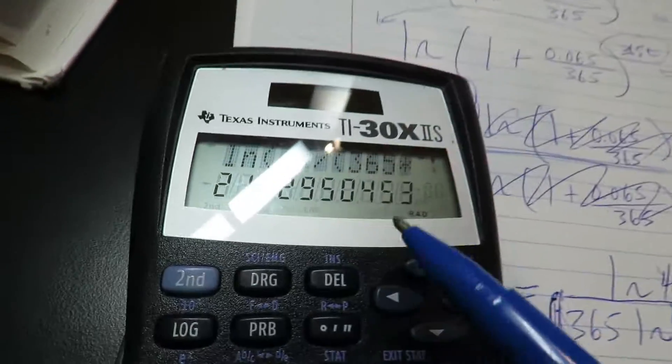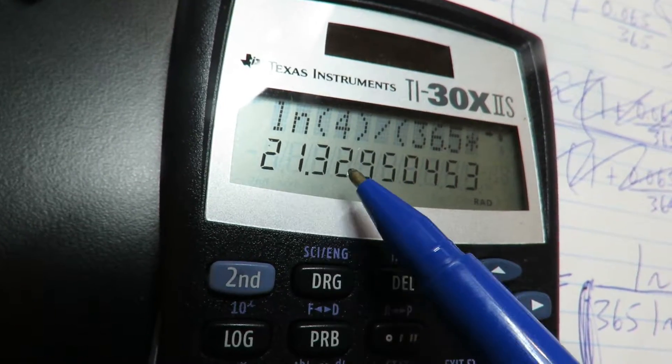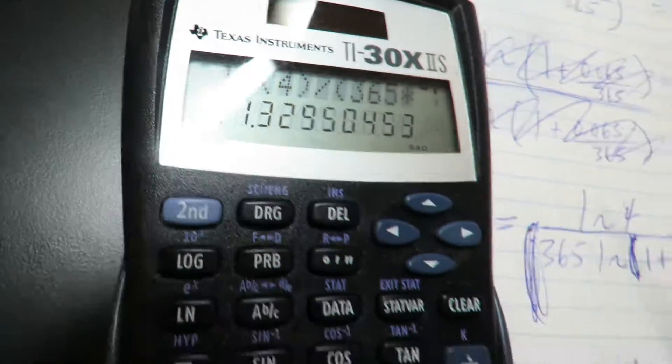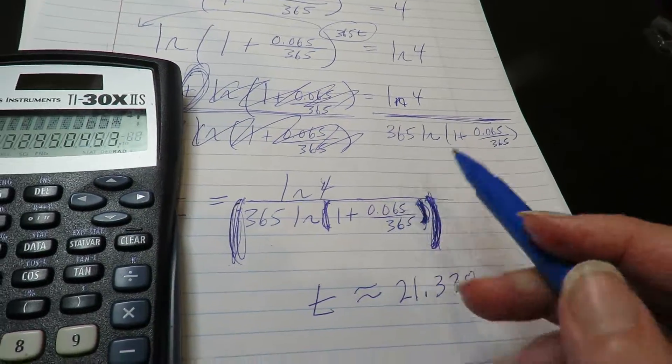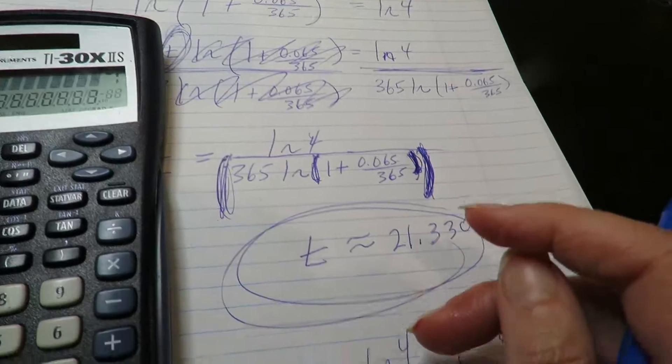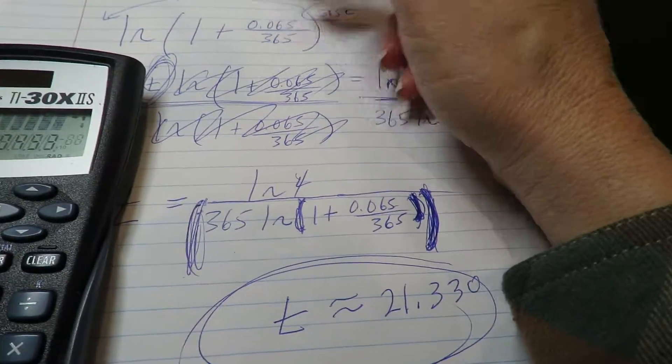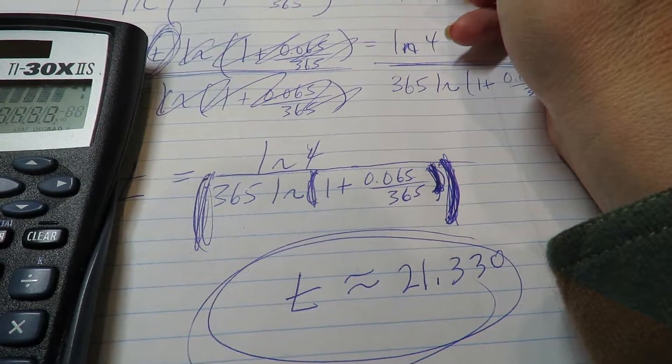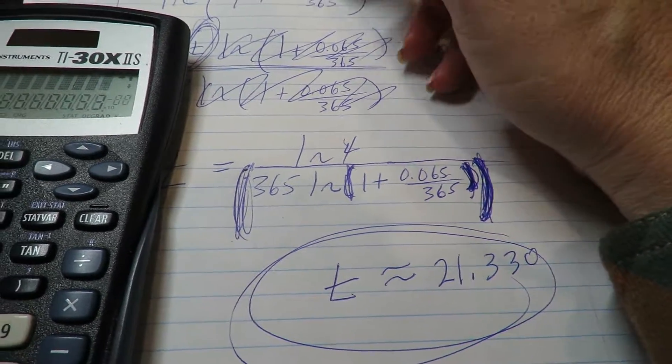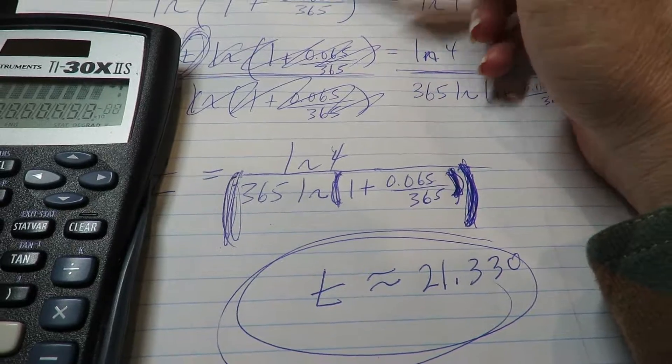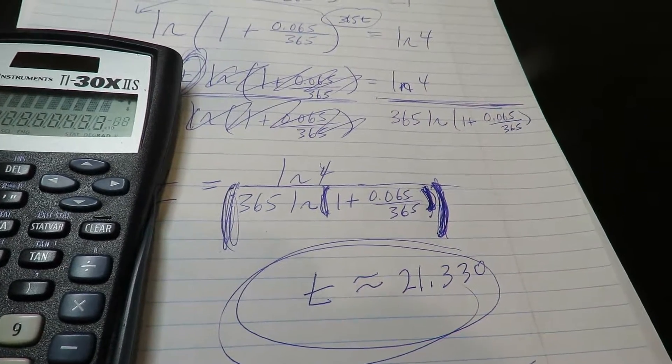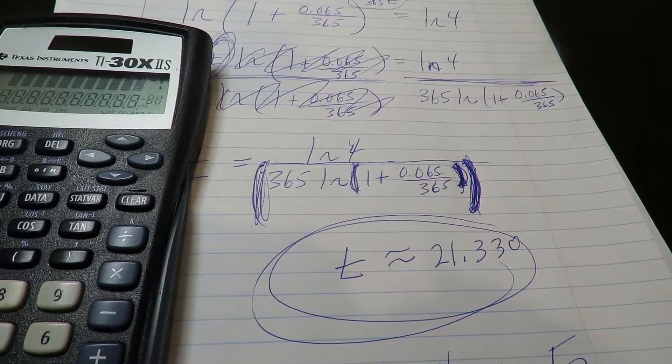So this is the final answer, 21.330, and hopefully you actually understand what you just found. You found the time for this situation to be true, for it to equal to 4, how much time it would take in terms of compound interest. Okay gang, that's it on this one. Catch you, bye-bye.